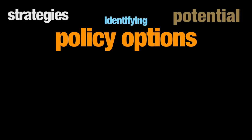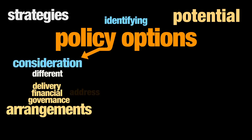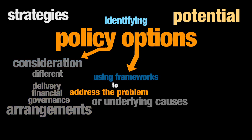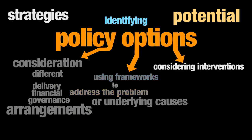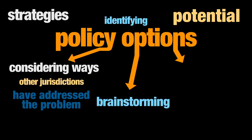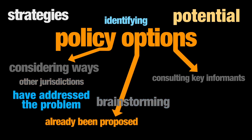Project teams have followed a number of strategies in identifying potential policy options. These include a consideration of different delivery, financial and governance arrangements that address the problem or its underlying causes; using frameworks developed to address the specific problem; considering interventions described in systematic reviews; considering ways in which other jurisdictions have addressed the problem; and brainstorming and consulting key informants. Sometimes the option has already been proposed by policy makers for implementation, and this is then considered alongside other options.